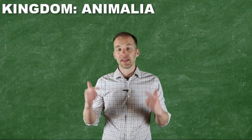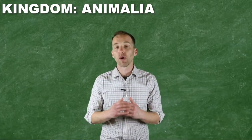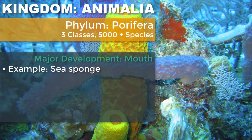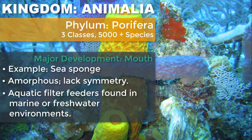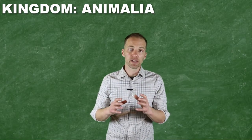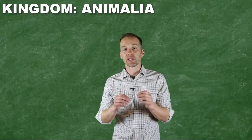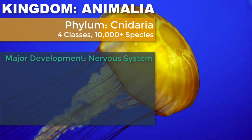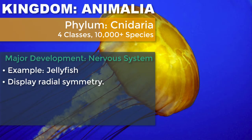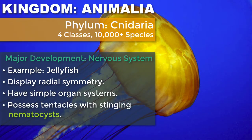One of the first and simplest groups of organisms we're going to look at in this kingdom we refer to as the Porifera, or more commonly known as the sponges. Sponges are recognizable because of their lack of body shape — they are amorphous. They do not display radial symmetry nor bilateral symmetry. They have an opening that serves as a mouth, and their amorphous shape and that opening are basically the characteristic features of this phylum. The next step are organisms that have developed a specialized nervous system — an ability to detect and respond to external stimuli — and those are the Cnidarians. The most recognizable organism from this phylum would be the jellyfish. They have relatively simple organ systems and display radial symmetry, but they do have a nervous system, so they can respond to external stimuli.